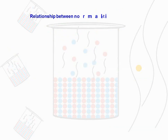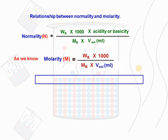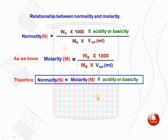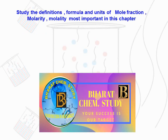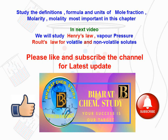The final formula of normality is: N = (WB × 1000 × acidity or basicity) / (MB × V(sol) in ml). Unit of normality is gram equivalent per liter. The relationship between normality and molarity: comparing formulas, normality = molarity (M) × acidity or basicity. Please study the definitions, formulas, and units of mole fraction, molarity, and molality as these are most important. In the next video we will study Henry's law, vapor pressure, and Raoult's law for volatile and non-volatile solutes.